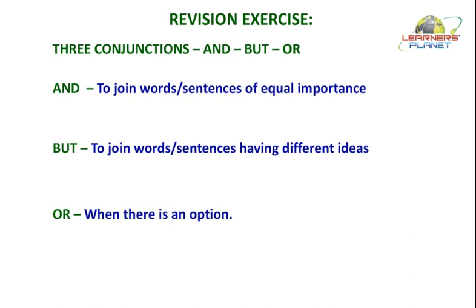We know that conjunctions are joining words. We have seen the uses of three conjunctions: and, but, and or. 'And' is used when we wish to join two words or sentences of equal importance. 'But' is used to join words or sentences having different ideas. 'Or' is used when there is an option, a choice.